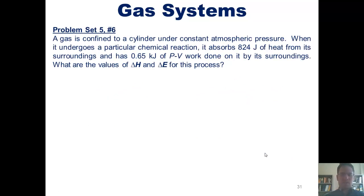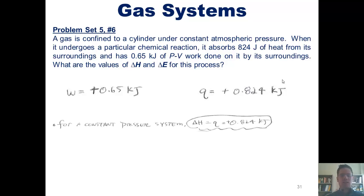Let's go ahead and do this problem together. As shown in the problem, the work done on the system by its surroundings is .65 kilojoules, and the heat transferred to the system by its surroundings is .824 kilojoules. Note that I've converted 824 joules into .824 kilojoules here. So what is the total change in enthalpy, delta H? Well, we learned from one of the equations on the previous slide that for a constant pressure system, delta H equals Q, which equals .824 kilojoules.